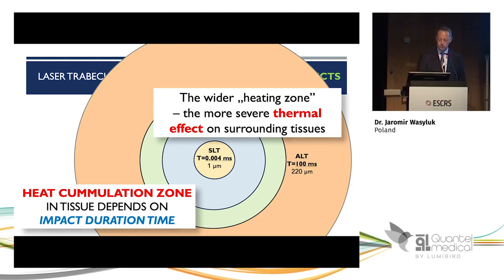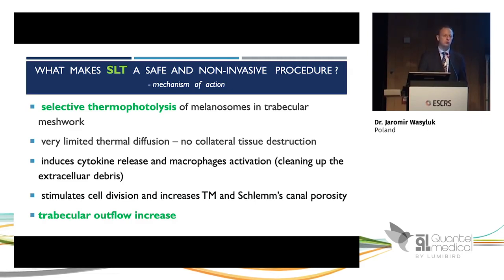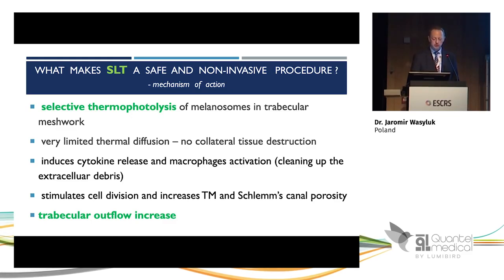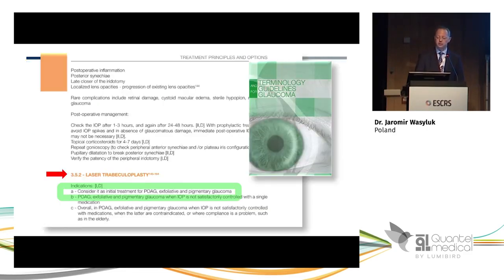The wider the heating zone, the more severe and unwanted thermal effects occur in surrounding tissues. What makes SLT safe and non-invasive is its unique mechanism of selective thermophotolysis of melanosomes in trabecular meshwork. There is very limited thermal diffusion with no collateral tissue destruction — even under electron microscopy no damage can be seen. It also induces cytokine release and macrophage activation; macrophages clean up extracellular debris, stimulate cell division, and increase porosity of trabecular meshwork and Schlemm's canal, resulting in increased trabecular outflow.